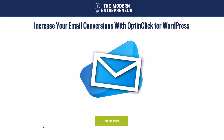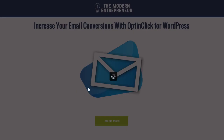Hey there and thanks for checking out OptinClick. OptinClick is a brand new plugin for WordPress that allows you to create two-step opt-in forms for your website. This is a more simplified landing page but this could easily be your full blog layout — it can work with any theme and you can drop in a button, a banner, or just a text link to bring up your email marketing opt-in form.